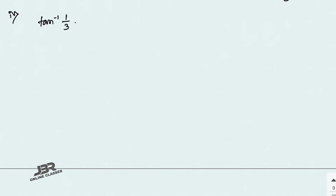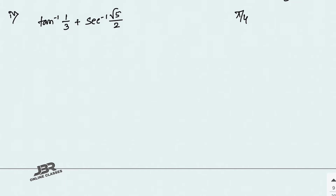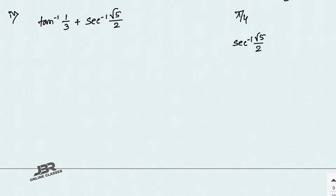Sum number 4: tan⁻¹(1/3) + sec⁻¹(√5/2) = π/4. Here we have tan⁻¹ and sec⁻¹. There is a formula for tan⁻¹(x) + tan⁻¹(y), but no formula combining tan and sec. So we need to convert sec⁻¹ to tan⁻¹ first.